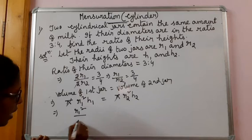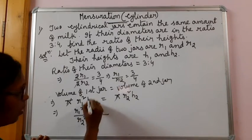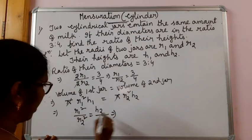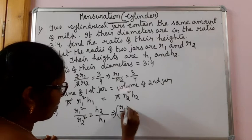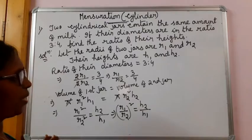R1 square by, let me bring this R2 square, equal to H2, when this H1 goes inside, by H1. That implies, R1 square by R2 square means, R1 by R2 whole square, equal to H2 by H1.